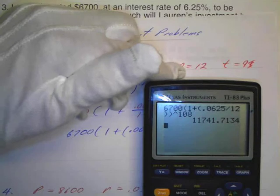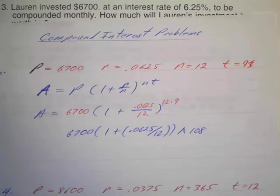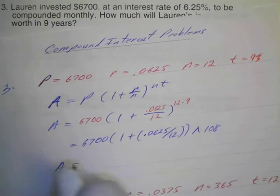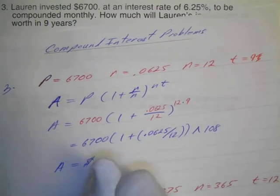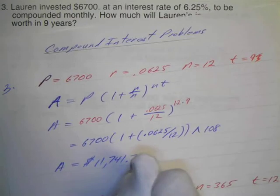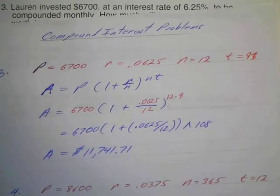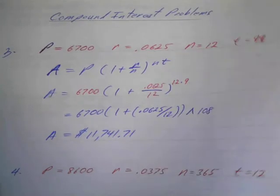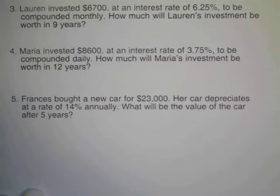All right. I'll just transfer this over here. So the amount equals $11,741.71. Okay. And the last compound interest problem, we've got a depreciation we'll do in a moment, but this is the last compound interest.